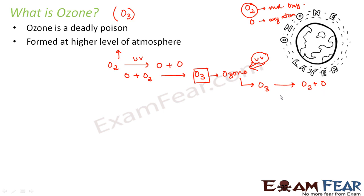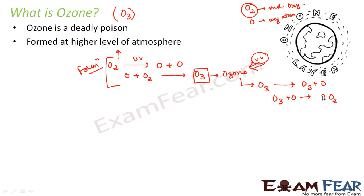This atomic oxygen again combines with ozone to form two molecules of molecular oxygen. So basically the first part is the formation of ozone and the second part is the decomposition of ozone. In the first part ozone forms from oxygen; in the second part ozone splits to form oxygen. But throughout this entire process, ozone is absorbing the ultraviolet radiation — and that is how the earth gets rid of UV radiation, so it cannot reach the surface of the earth.